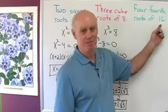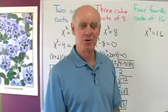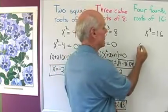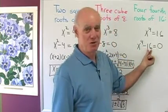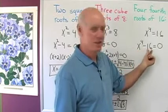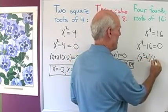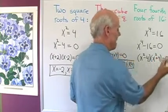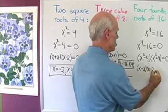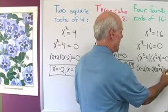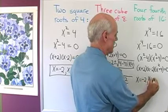How about the fourth roots of 16? I'll do the same thing — solve x to the fourth equals 16. In standard form, x to the fourth minus 16 equals 0. Since x to the fourth minus 16 is x squared squared minus 4 squared, this is the difference of two squares, which factors as x squared minus 4 times x squared plus 4. Factoring again: x plus 2 times x minus 2 times x squared plus 4 equals 0. Setting each factor equal to 0 gives x equals negative 2 and x equals positive 2.